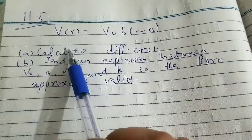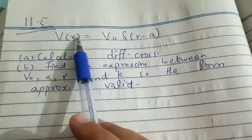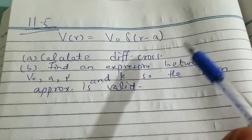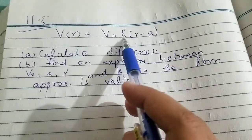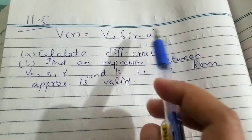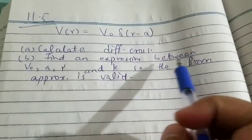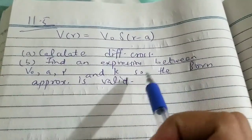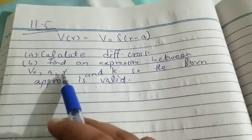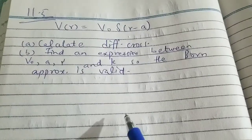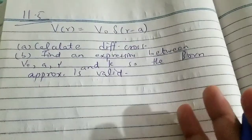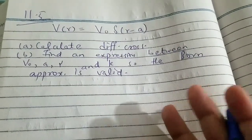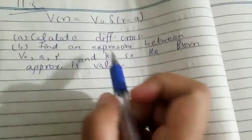Here is problem 11.5. It says that the potential that causes the scattering is given by a delta function: V naught times delta of (r minus a). We need to calculate the differential cross section, and secondly find the relation between V naught, a, mu, and k so that the Born approximation is valid. We have to use the condition imposed for the validity of the Born approximation.